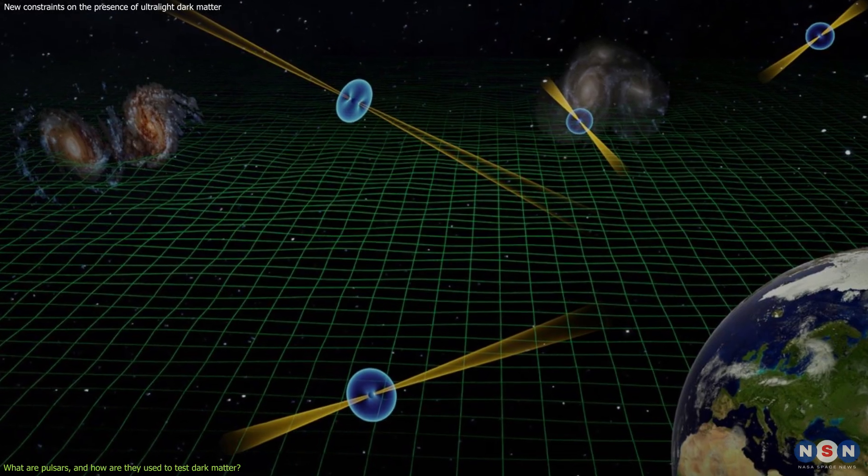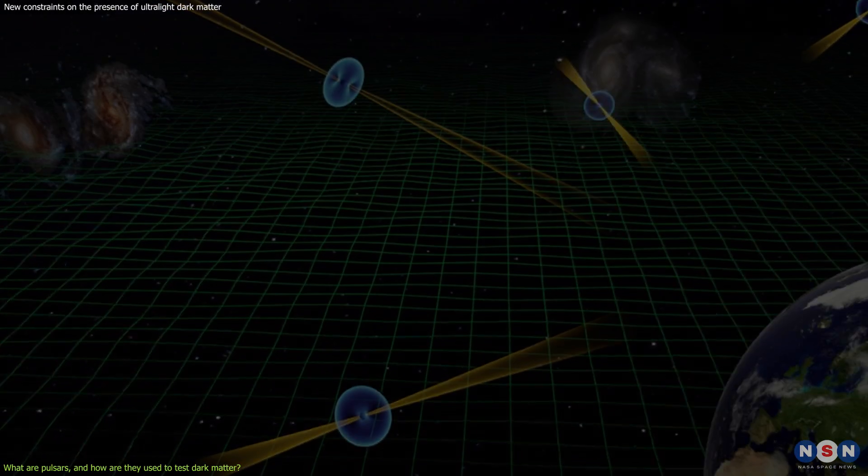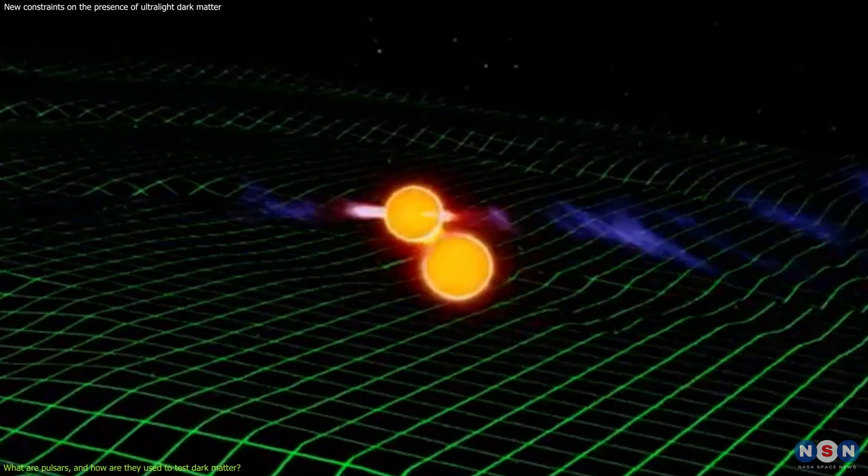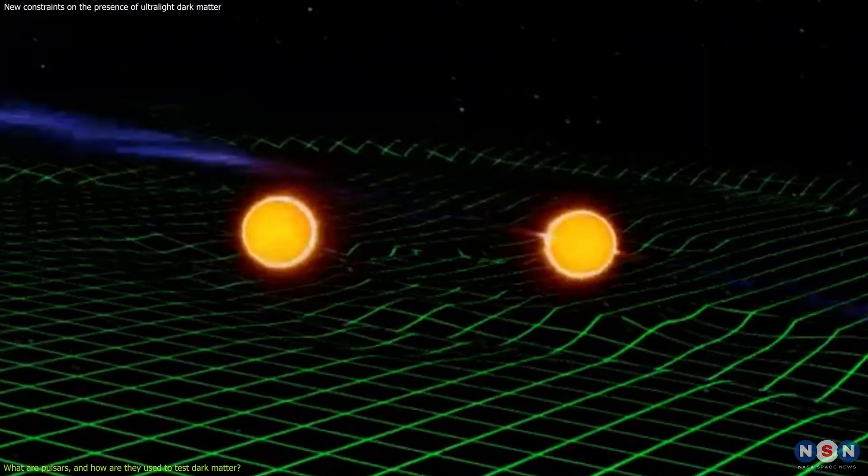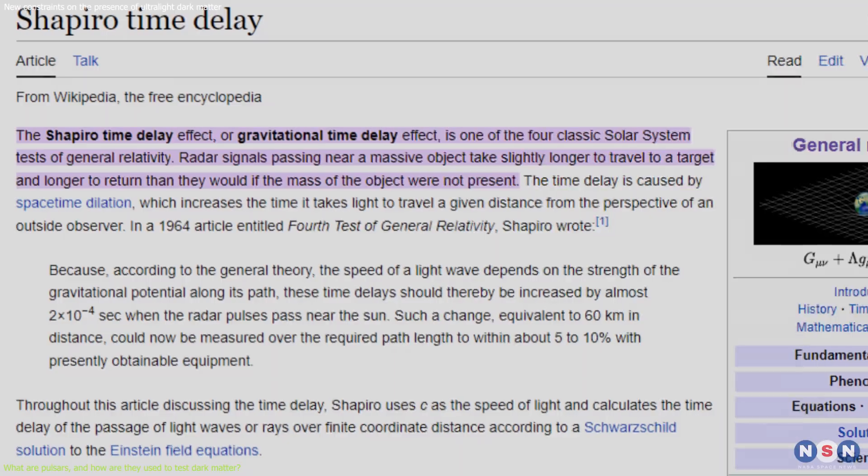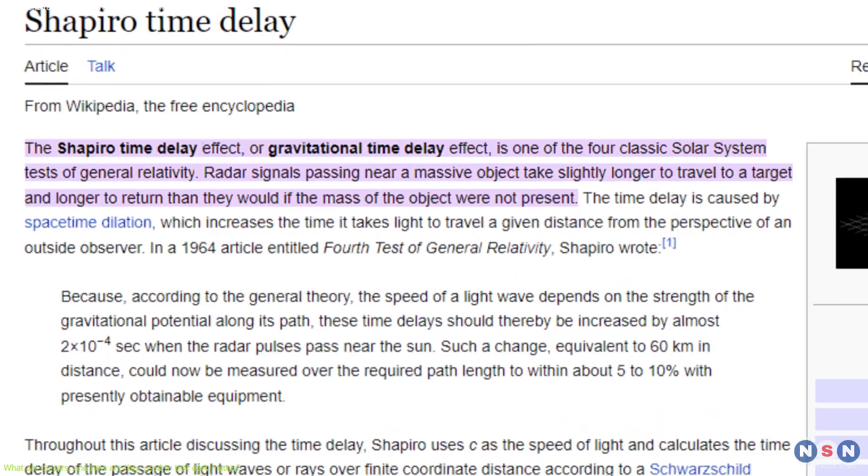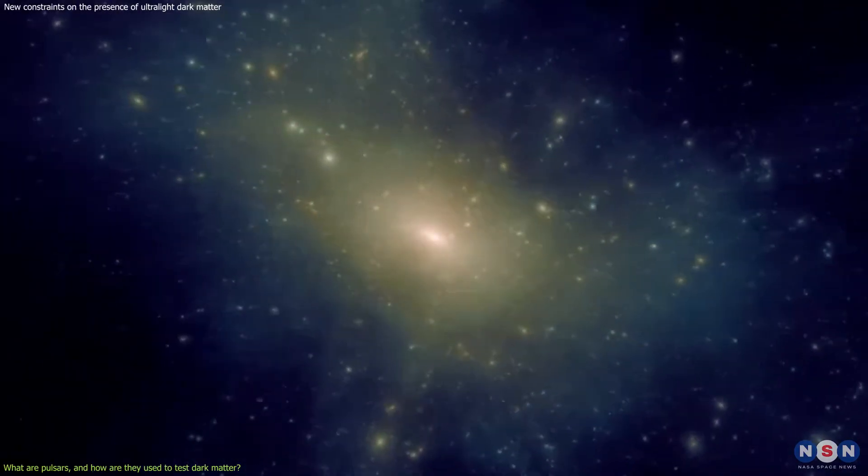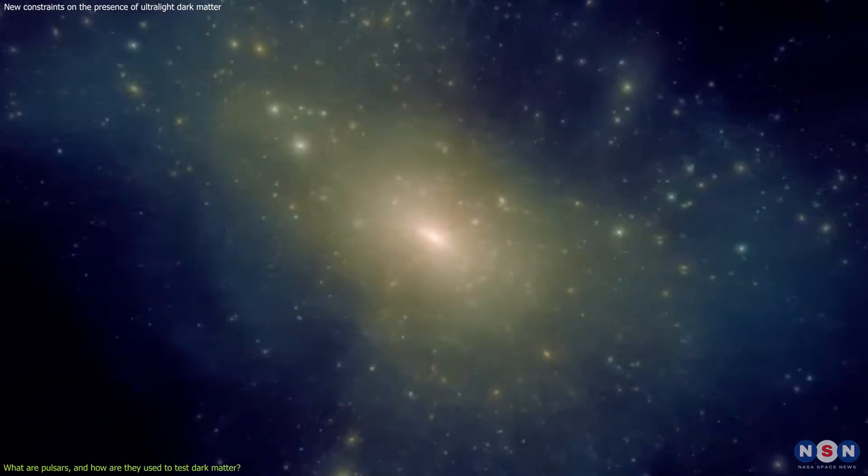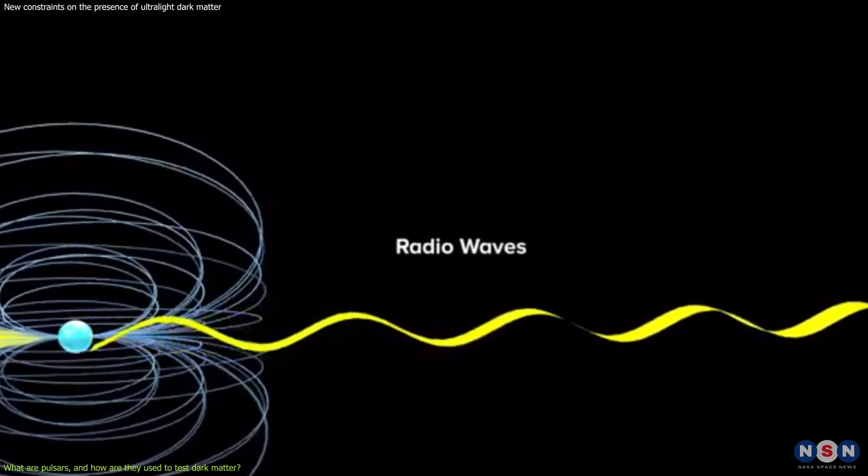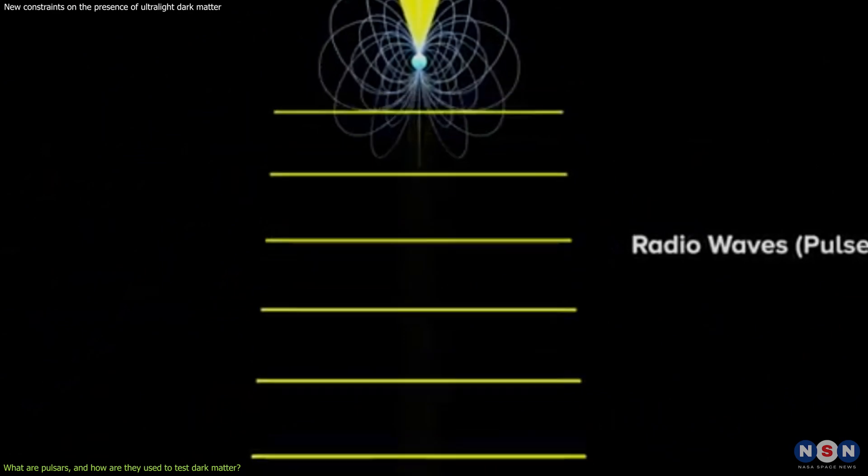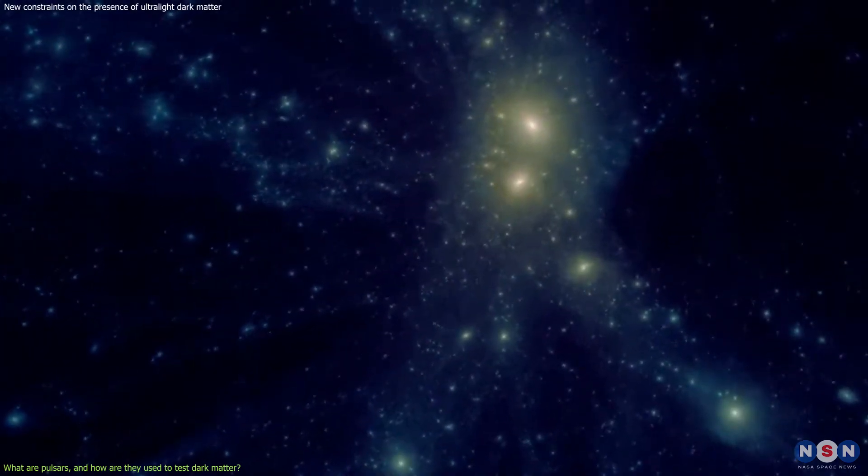As the Earth and the pulsars move through this halo, they would experience tiny variations in their gravitational potential, which would cause small changes in the arrival time of the pulsar signals. This effect is called the Shapiro time delay, and it is proportional to the mass and density of the dark matter particles. By measuring the timing of pulsars, scientists can try to detect these variations and infer the properties of the dark matter particles.